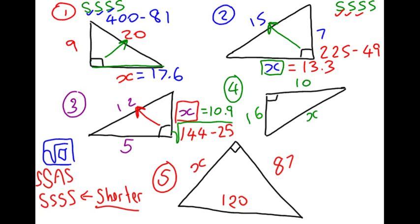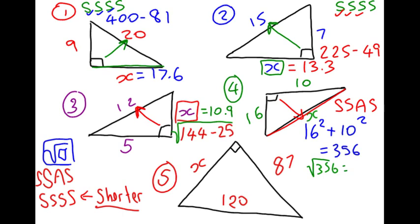This next one, number 4. Now, X is opposite the 90 degree angle. So, this is the first one that has been finding the hypotenuse. It's the first one that's been S, S, A, S. And you have to be very careful to get the right one. So, 16 squared plus 10 squared. Well, 16 squared is 256. 10 squared is 100. So, that gives you 356. And then you have to square root 356. And you get the answer of, just let me type it in. Can't do that one in my head. 19.1.